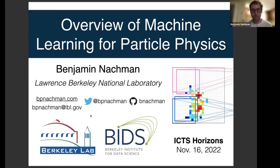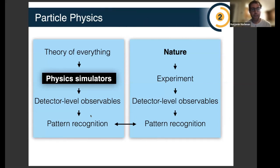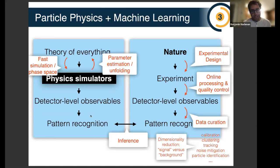I want to start by setting the scene for how I view what we do in high energy physics. There are two parallel paths: the theory path on the left and the experimental path on the right. The ultimate goal is to infer something about nature and determine our theory of everything. On the left we have a forward model — we simulate nature given by some Lagrangian — and then we build experiments to make observations, compare the two, and do inference. Machine learning is playing a role, in some cases a critical role, in all aspects of this pipeline, both on the theory and experimental sides, from experimental design to control to data processing, and on the theory side for accelerating slow simulations and doing inference.